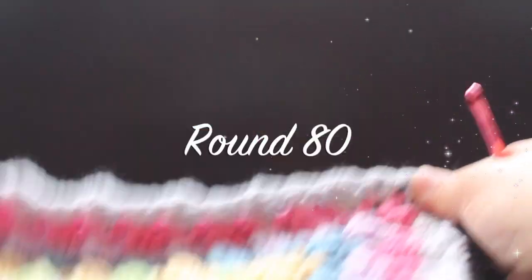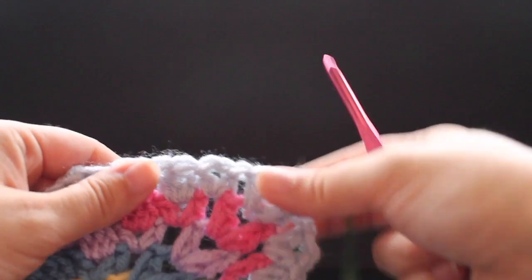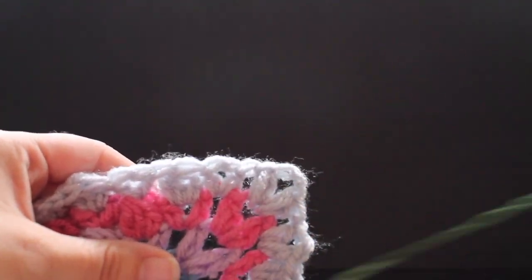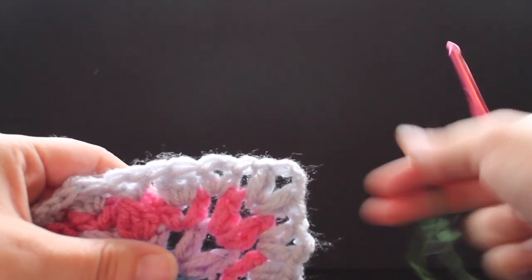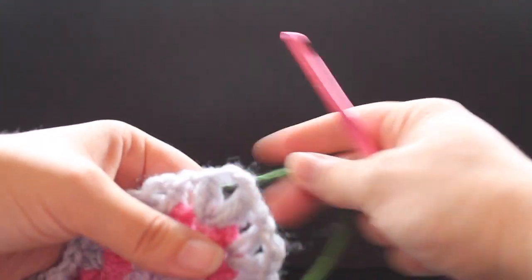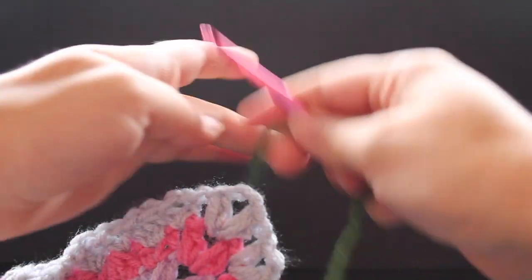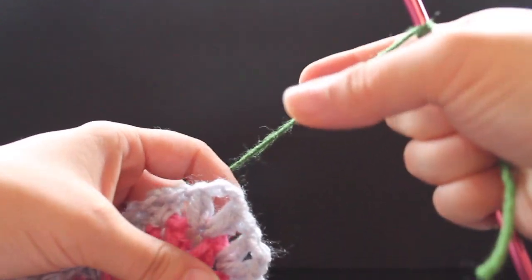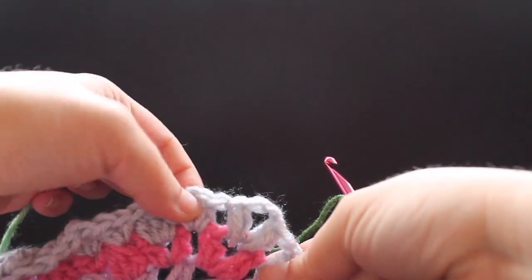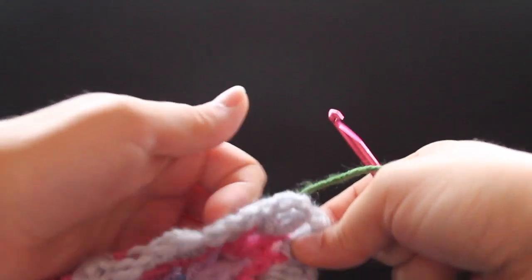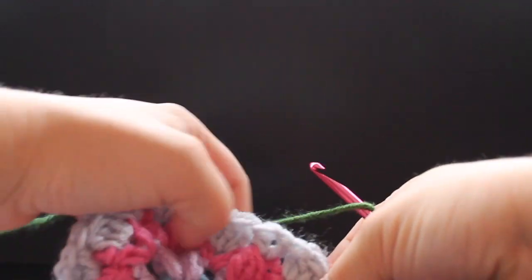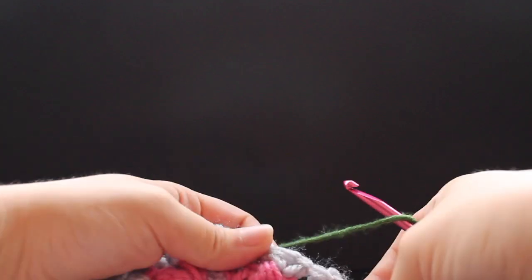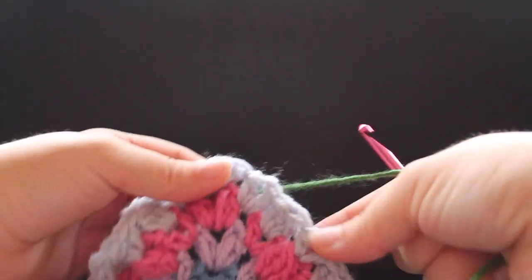Getting started on edging round 80. Here we are at the corner, getting ready to do the edging. The pattern calls for us to start here, but I'm going to get started before my corners. We're going to be working in a half double crochet v-stitch.